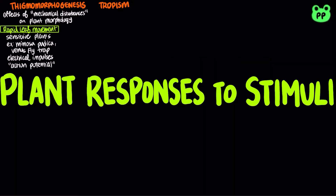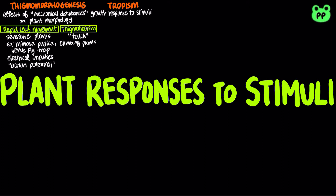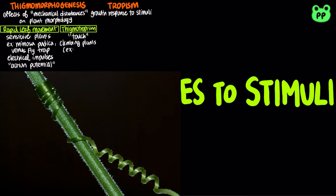Thigmomorphogenesis also includes thigmotropism. Thigmotropism refers to the growth response to touch, and it is a slower response than rapid leaf movement. For example, in climbing plants such as vines, a specialized stem or leaf known as a tendril would coil when it touches a supporting plant and wrap around it.